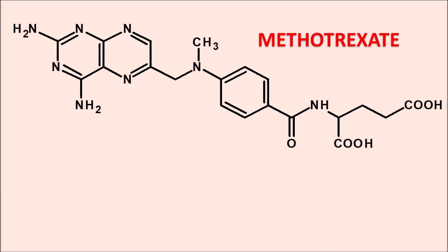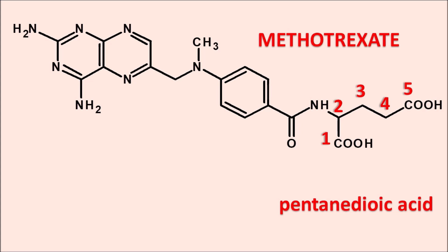Next one is methotrexate. Methotrexate has a large structure but it can be split into three parts. One part is having the carboxylic acid moiety — this is a glutaric acid attached with an amino group at the second position, which is nothing but glutamic acid. So methotrexate has glutamic acid on one terminal, attached to a para-aminobenzoyl moiety, which is finally attached to a ring system — the pteridine ring system. This pteridine is the modified form of the 2,4-diaminopyrimidine ring system. Since we give preference to the carboxylic acid, the suffix of the name becomes pentanedioic acid. So methotrexate can be written as 2-aminopentanedioic acid, which is nothing but glutamic acid.